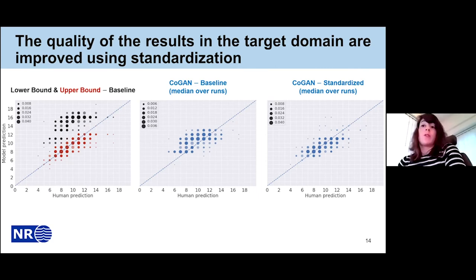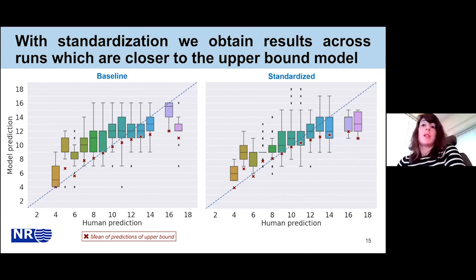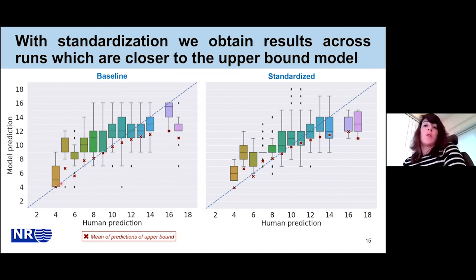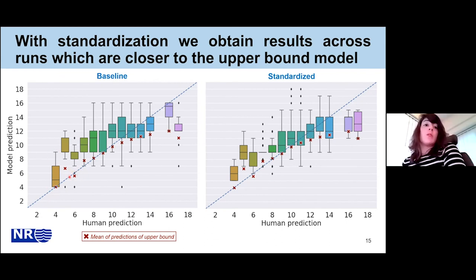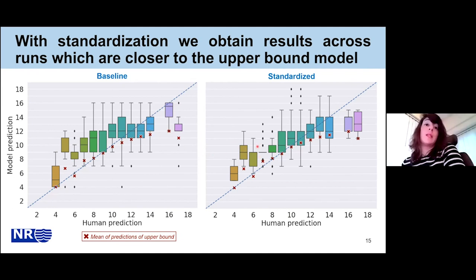The last result I wanted to share is the variability of the CoGAN model predictions for human-predicted ages across the different runs, shown as box plots — baseline on the left and standardized on the right. For example, for a human prediction of age four, the baseline models across five runs predict ages ranging from four to nine, which is a pretty high variability. The red X mark denotes the mean predictions of the upper bound model. We observe a tendency to overpredict younger ages and underpredict older ages for both the baseline and standardized data, which may be related to having fewer training samples within those age ranges.